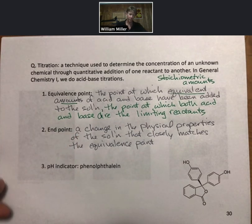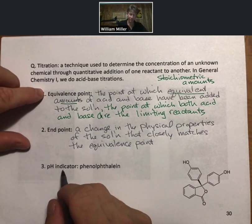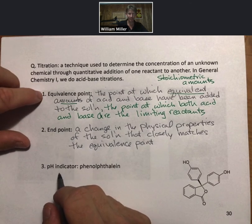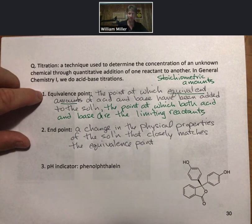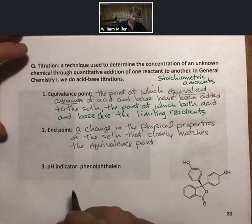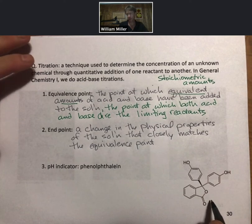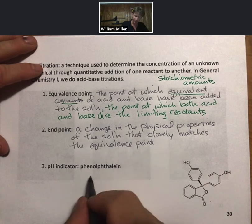For acid-base titrations done in this course, the best indicator of the equivalence point when acid and base have been added together in equal amounts is going to be phenolphthalein. In an acid-base titration that we're doing today, the pH at the equivalence point will be 7 for the calculations we're doing today, which means you're at a neutral solution. Phenolphthalein is pictured right here in a structure that will make sense later this semester.